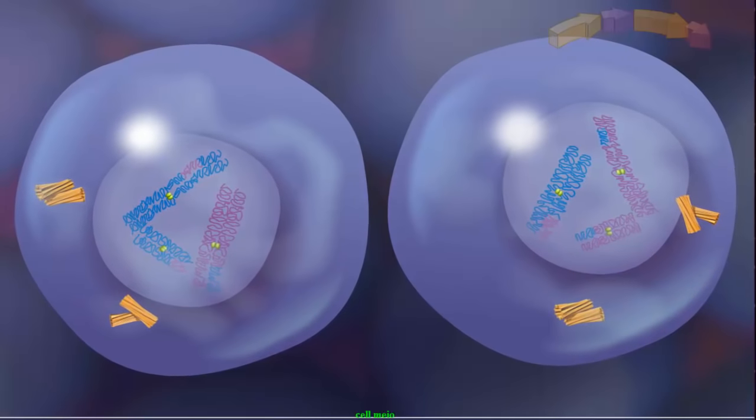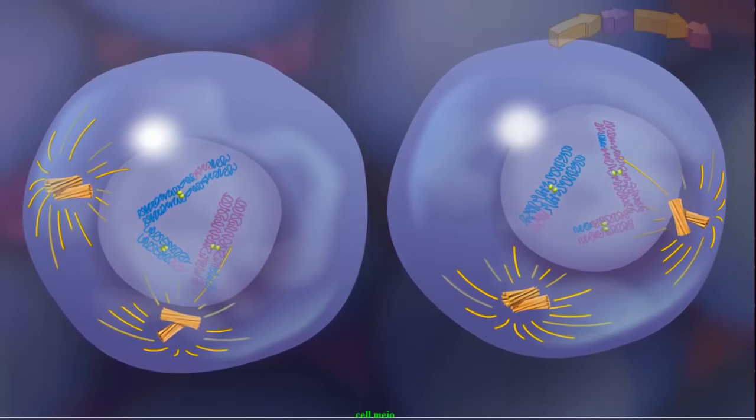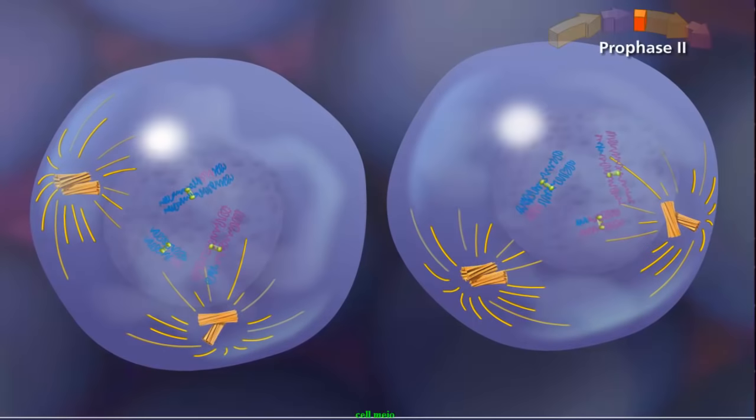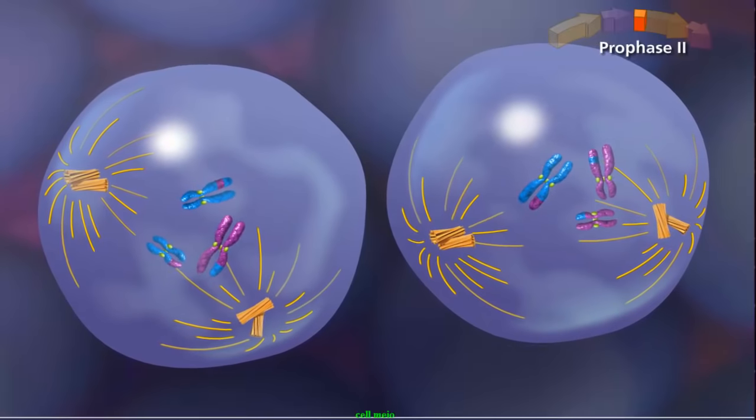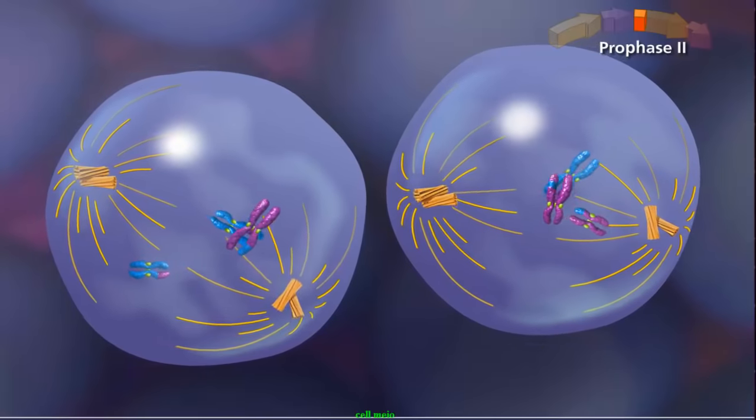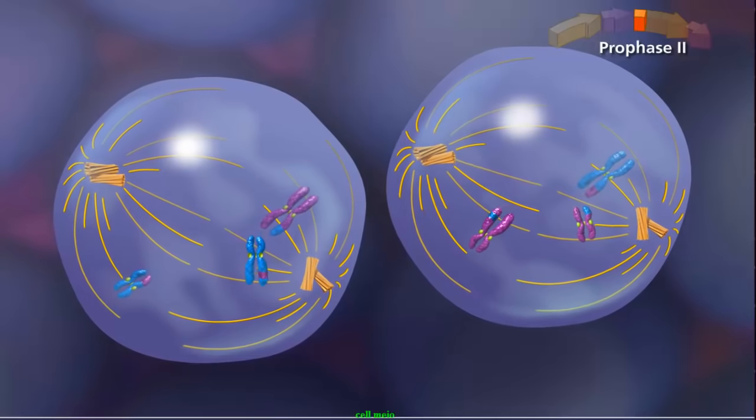Centrioles again duplicate and begin moving to opposite poles of each cell. In prophase II, the sister chromatids condense while the spindle starts to form as the nuclear envelope disappears.